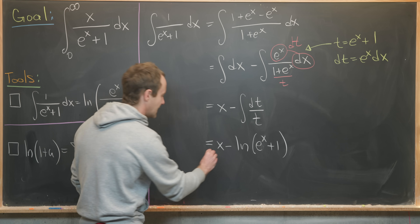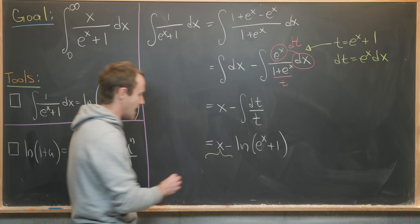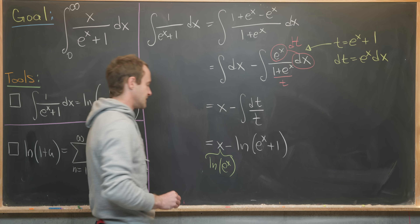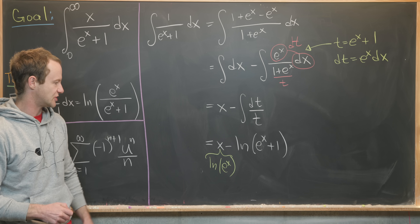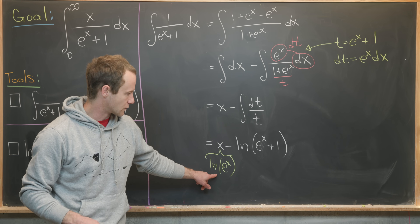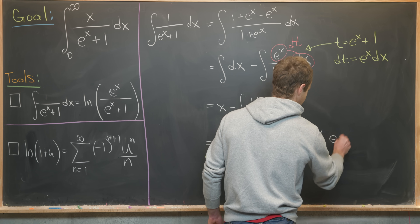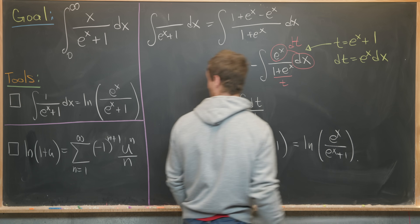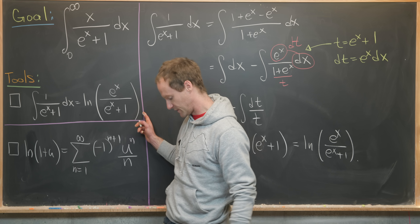We can rewrite x as the natural log of e to the x using the inverse relationship of the exponential and logarithmic functions. Then using log rules we put the two ln terms together, giving us ln of e to the x over e to the x plus one — which is exactly what we wanted for this first tool.